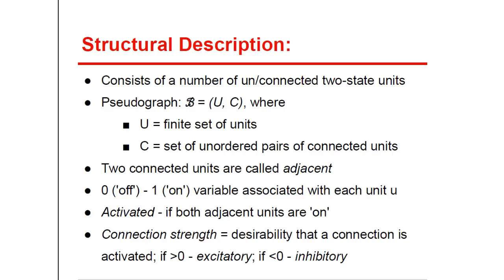The Boltzmann machine is a network consisting of a number of two-state units connected in some way. It is represented via pseudograph: B equals U, C, where U represents a finite set of units, and C is a set of unordered pairs of elements of U, denoting connections between units. This set of connections includes all loops. When two units are connected, we call them adjacent. Unit U can be in either an on or off state. A connection is activated when both units U and V are on. With every connection, a connection strength is associated — a quantitative measure of the desirability that a connection U, V is activated. If the value is positive, it is desirable for the connection to be activated, exhibiting excitatory behavior. If it is negative, it is undesirable — the behavior is inhibitory.